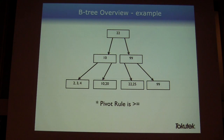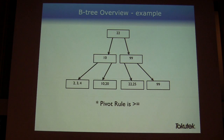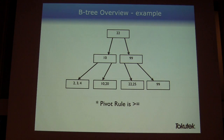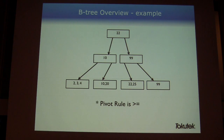Here's a simple example: a B-tree with one value in the internal nodes. My rule is greater than or equal to. At the root we have the number 22 — anything greater than or equal to 22 goes right, less than goes left. Down in the leaf nodes we're storing values, with multiple values per leaf node stored in sorted order for efficient lookup.